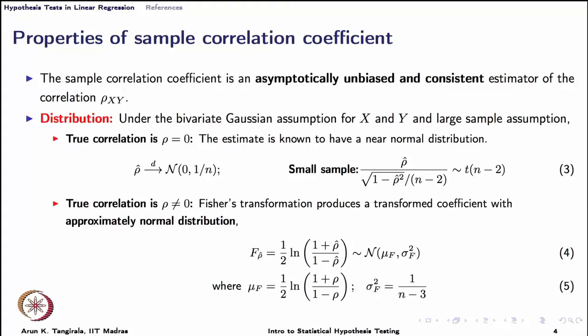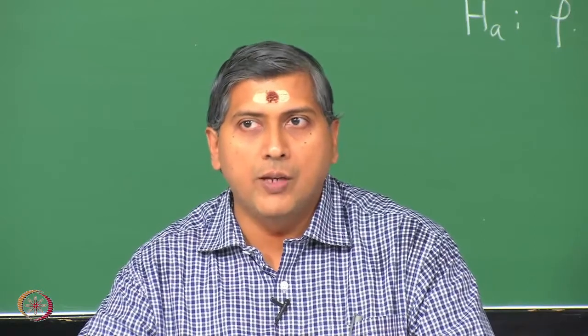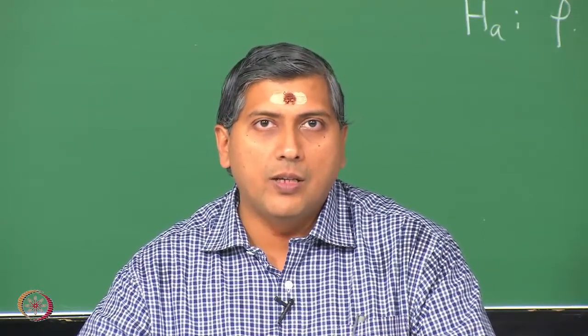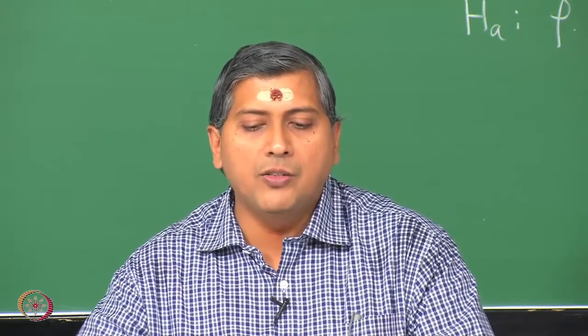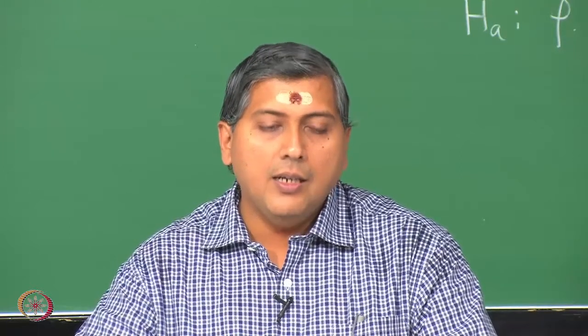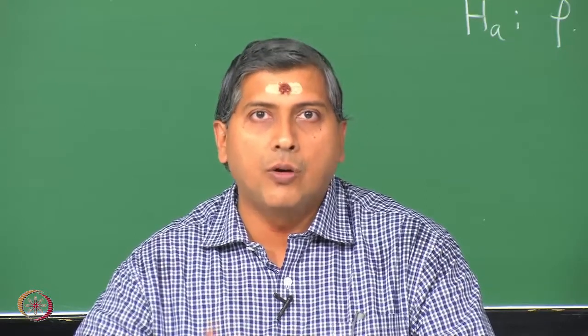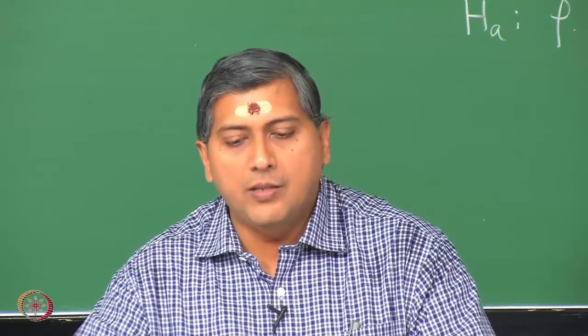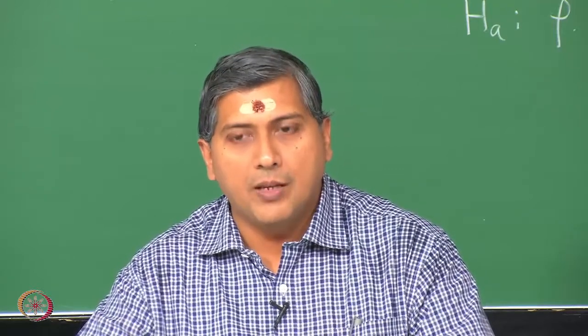Depending on whether your sample size is small or large, you can use one of these distributions. If you try to use the small-sample expression for the large-sample case, you would not be making much of an error, because the t-distribution tends to a Gaussian as n becomes large. But if you were to use the large-sample expression for a small sample size, there is big scope for making an error, so just be careful.